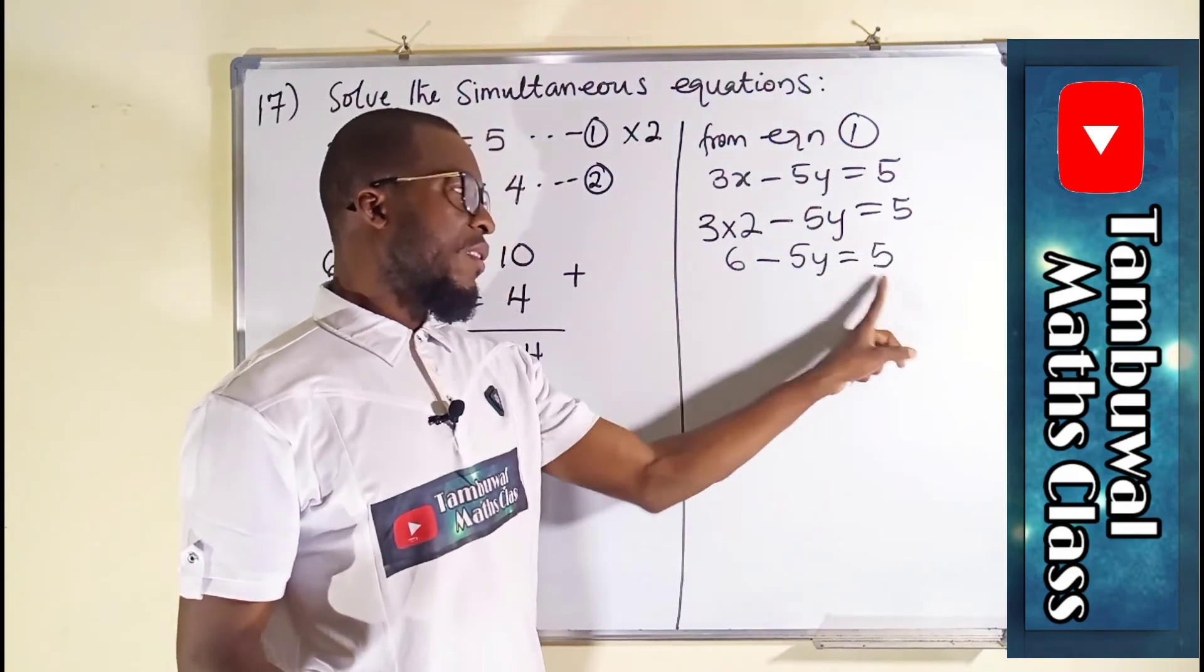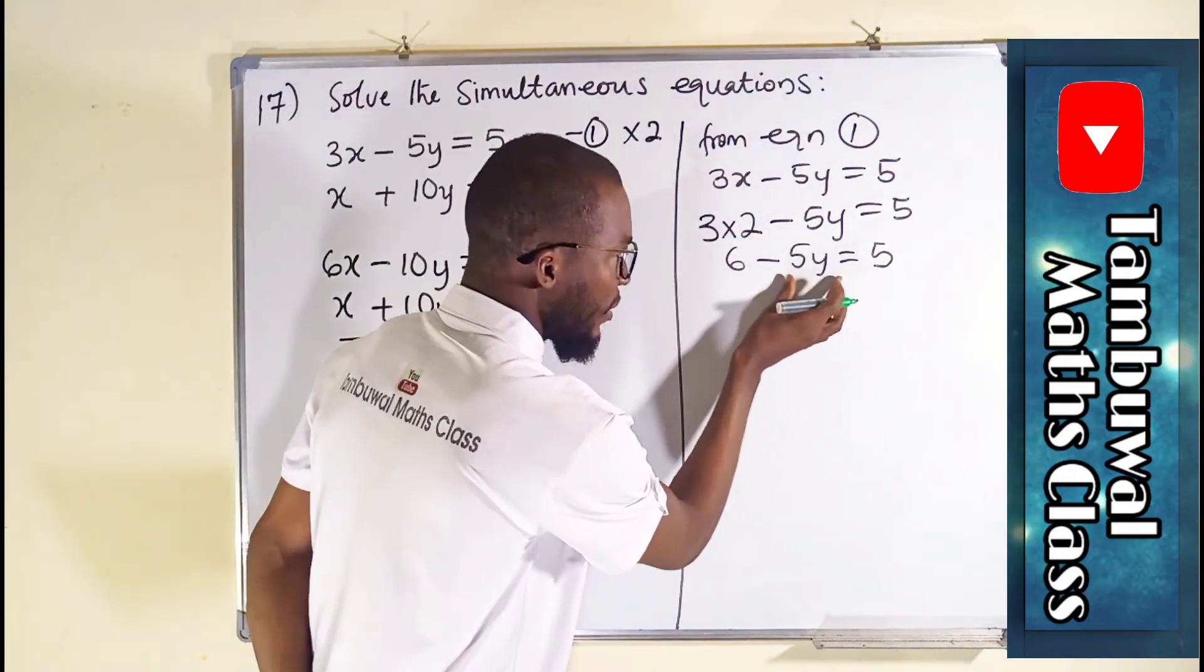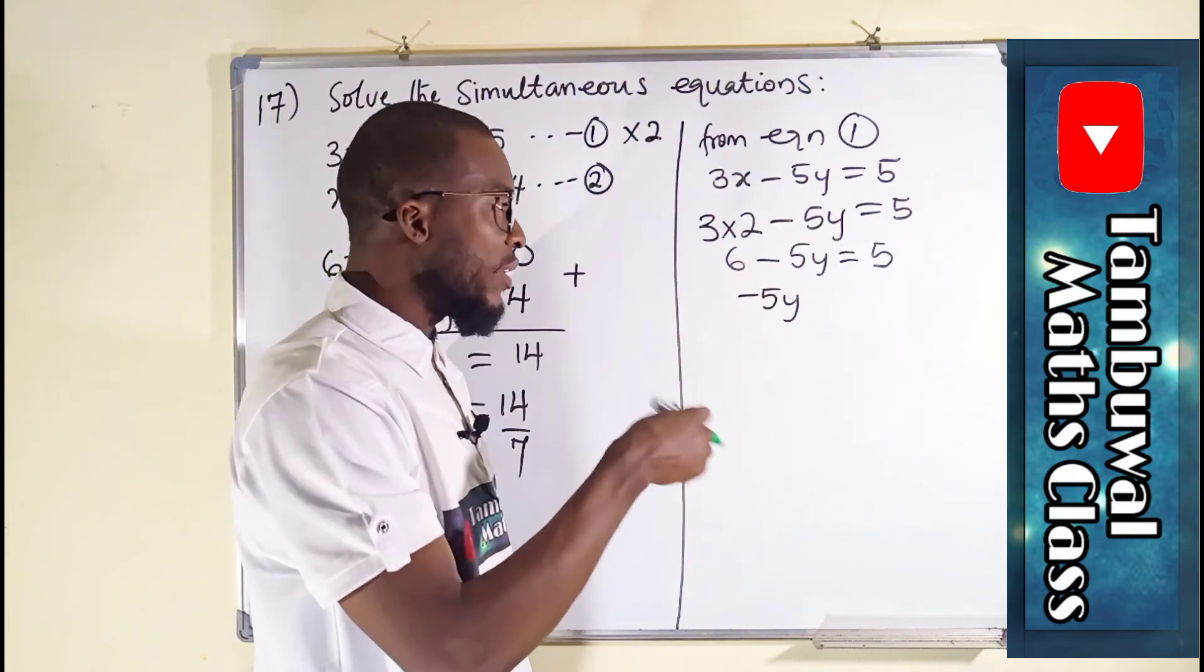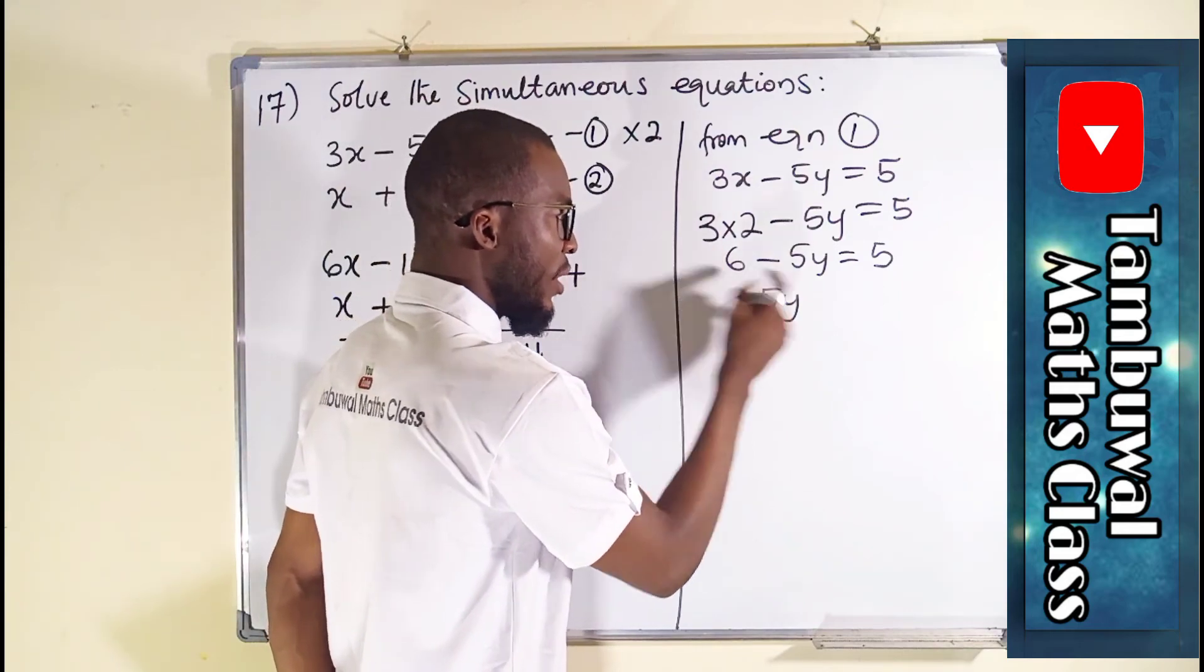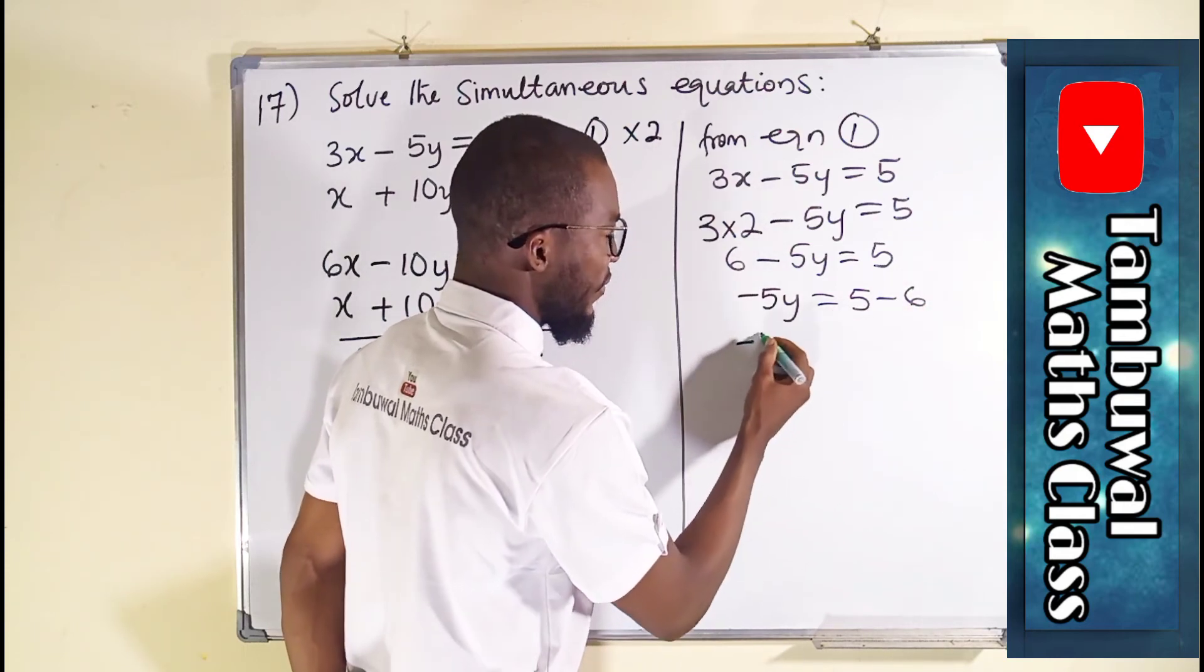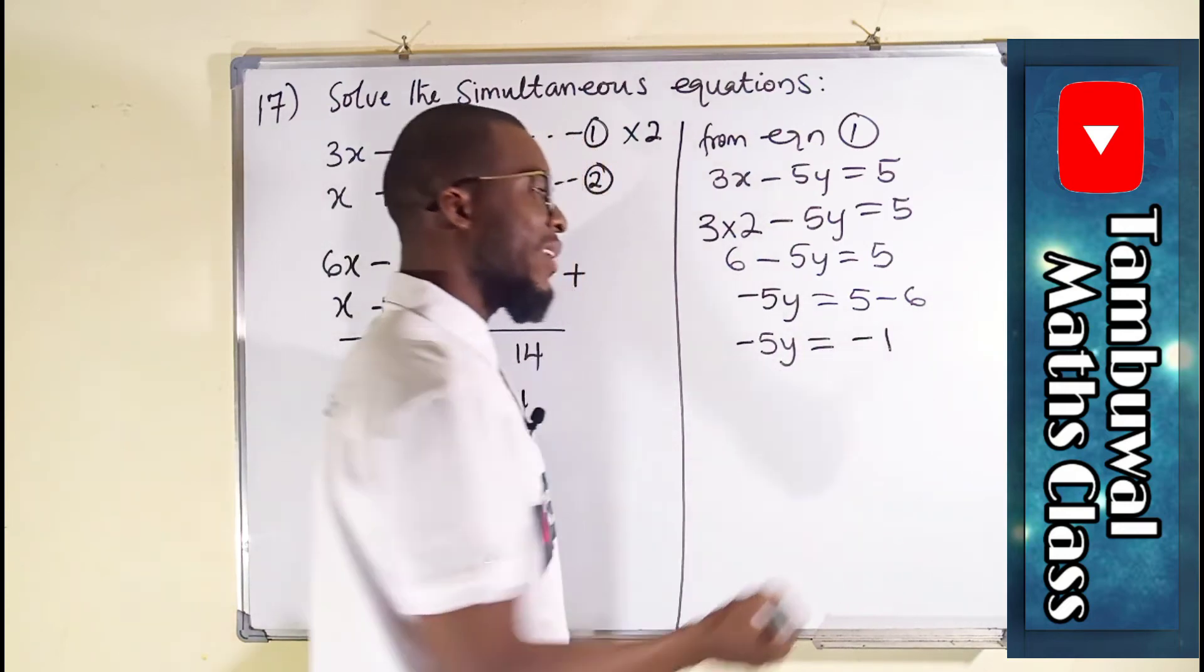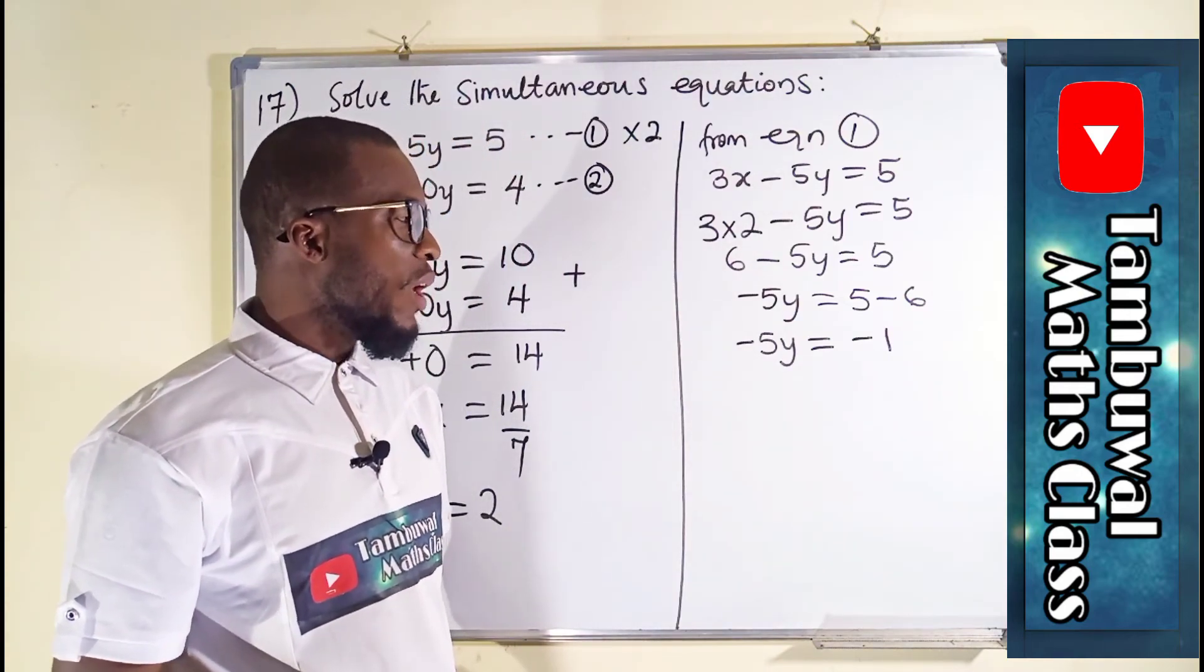All right. This is constant. This is constant. We are going to join them together because they are like terms. Leaving minus 5y here. Whenever a term crosses over an equality sign, whatever sign is attached to that term will change to its opposite. This is a positive number. Once it crosses over, it becomes negative. So 5 minus 6 will now be equal to minus 1 because 5 minus 6 is minus 1.